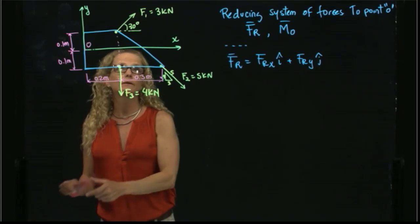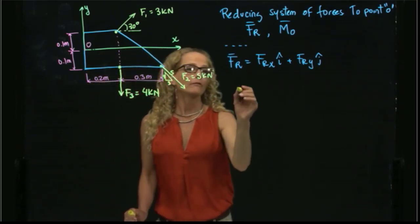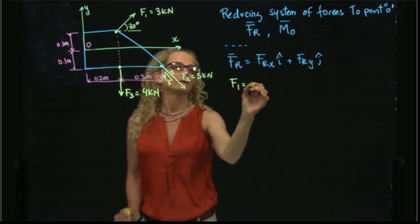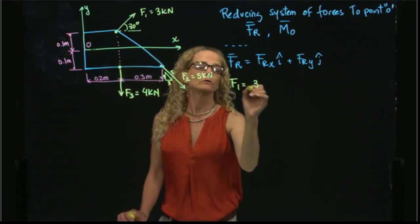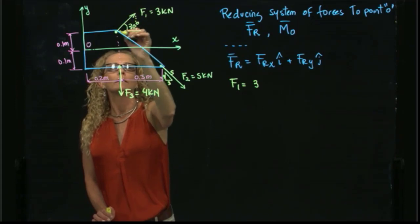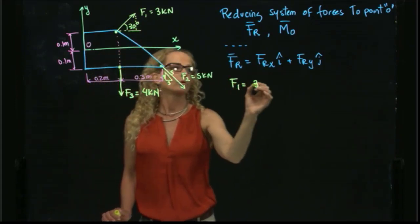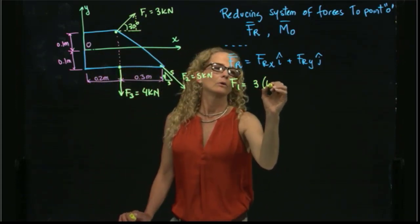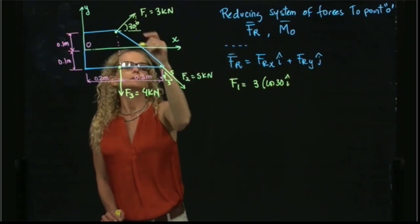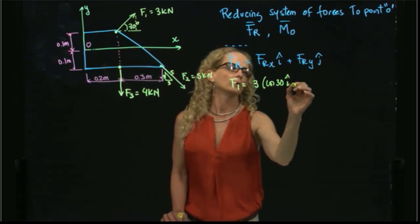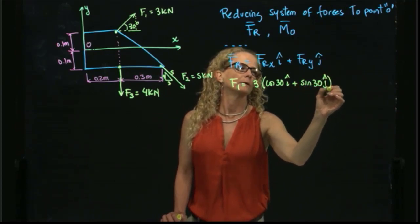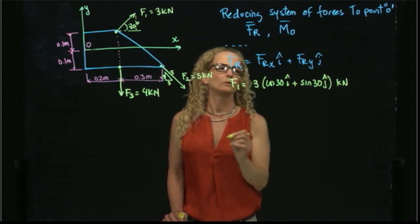F1 has a magnitude of 3 kilonewtons. We decompose it: the X component will be cosine of 30°, which is the square root of 3 over 2, in the I direction, and the Y component will be sine of 30° in the J direction.